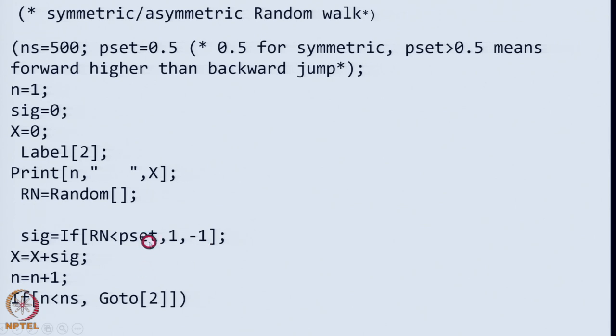In this case p set is 0.5 and if r n is less than 0.5, all the values of the random numbers occurring below 0.5 it will jump plus 1 forward, or else it will jump minus 1. If p set is more than 0.5, let us say 0.6, then random numbers will occur 60 percent more often between 0 and 0.6.